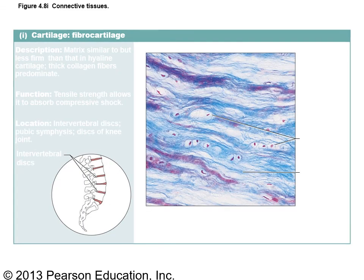The third type of cartilage is fibrocartilage. The fibers here are very thick bands of collagen fibers, and the cells sit in lacunae — remember, the cells in cartilage are called chondroblasts. This tissue resists compression and is very strong. Intervertebral discs have a capsule made of fibrocartilage to resist compression, and fibrocartilage is also found in the knee, which takes a big beating.